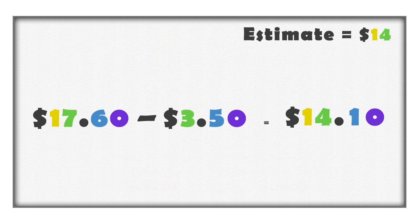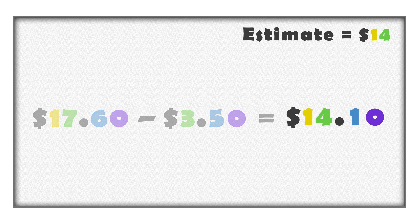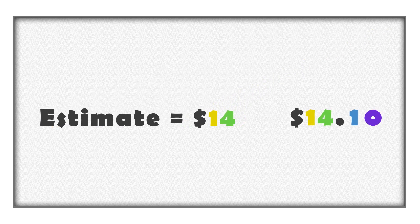We subtracted the decimals. We can write this as an equation: $17.60 minus $3.50 is equal to $14.10. If the difference is close to what we estimated, we can be confident that our work and our answer is correct.